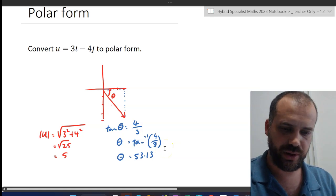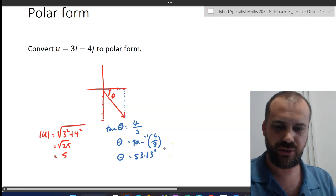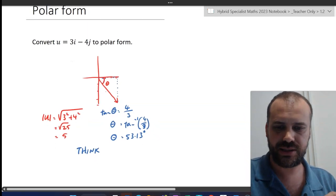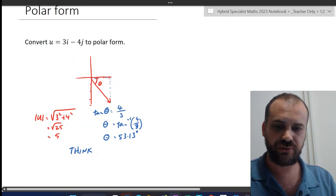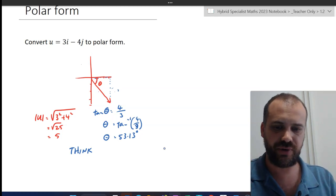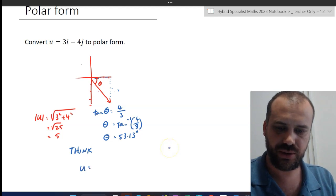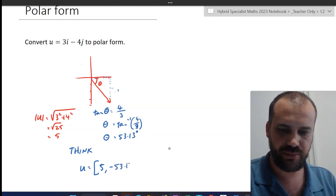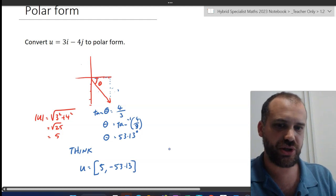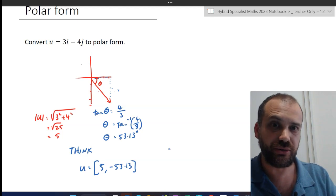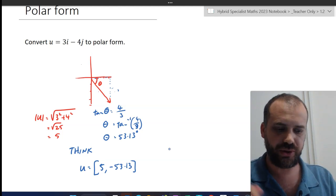And so I found the answer 53.13 degrees, but then think. You've got to stop and think about what the angle means. So in this case we don't want to use positive 53.13. Because we're in this quadrant of the four quadrants, because we're in this one right here, we've got a negative angle. So we finish off by saying u is equal to magnitude 5 and negative 53.13. This is why drawing a picture is so important. If you draw the picture, you won't get the angle wrong.